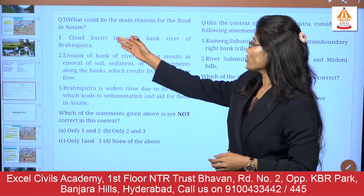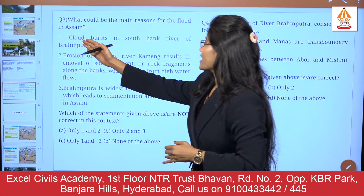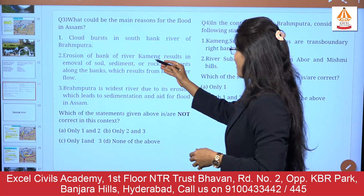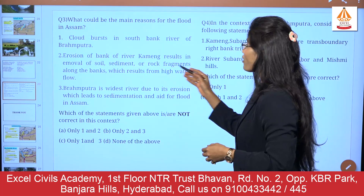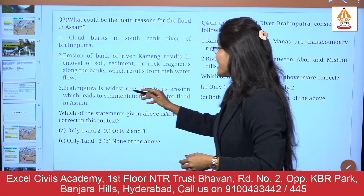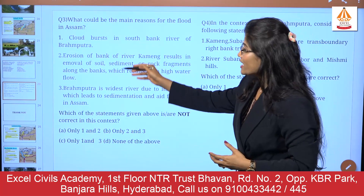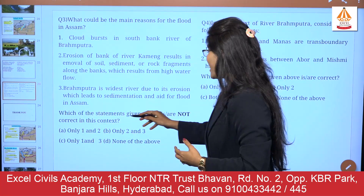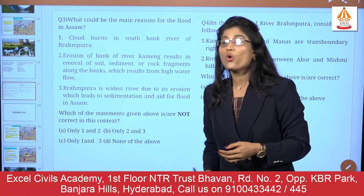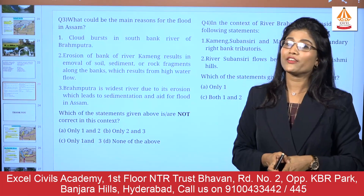Question 3: What would be the main reason for floods in Assam? Statement 1: Cloudburst in the south bank rivers of Brahmaputra. Statement 2: Erosion of the bank of Kameng results in removal of soil sediments along the banks due to high water flow. Statement 3: Brahmaputra is the widest river due to erosion which leads to sediments aiding floods in Assam. Options: (A) Only 1 and 2, (B) Only 2 and 3, (C) Only 1 and 3, (D) None of the above.